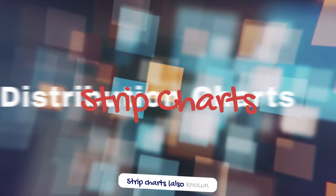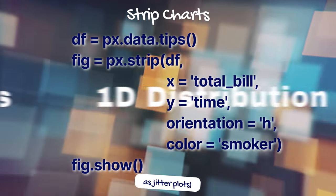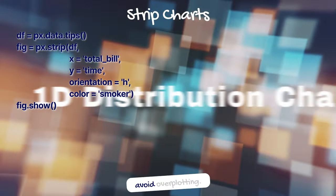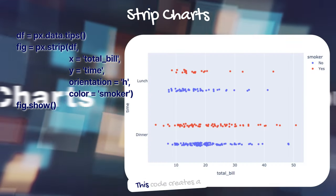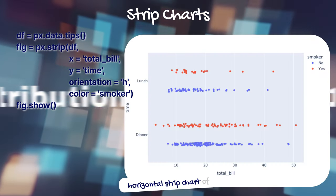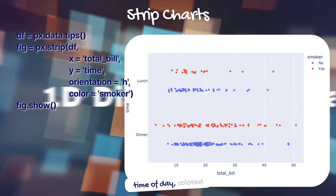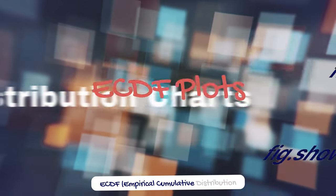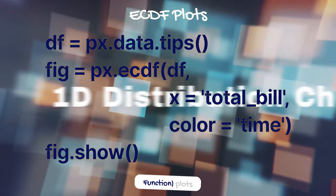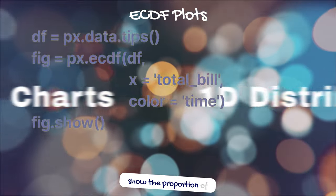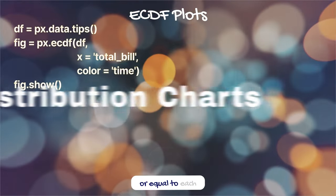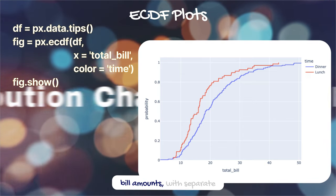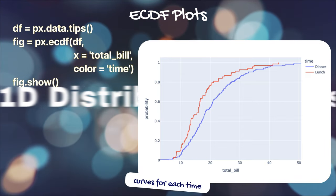Strip charts, also known as jitter plots, display individual data points in a distribution with random noise added to their positions to avoid overplotting. This code creates a horizontal strip chart of total bill amounts by time of day, colored by smoker status. ECDF, or empirical cumulative distribution function plots, show the proportion of data points less than or equal to each value. This code creates an ECDF plot of total bill amounts with separate curves for each time of day.